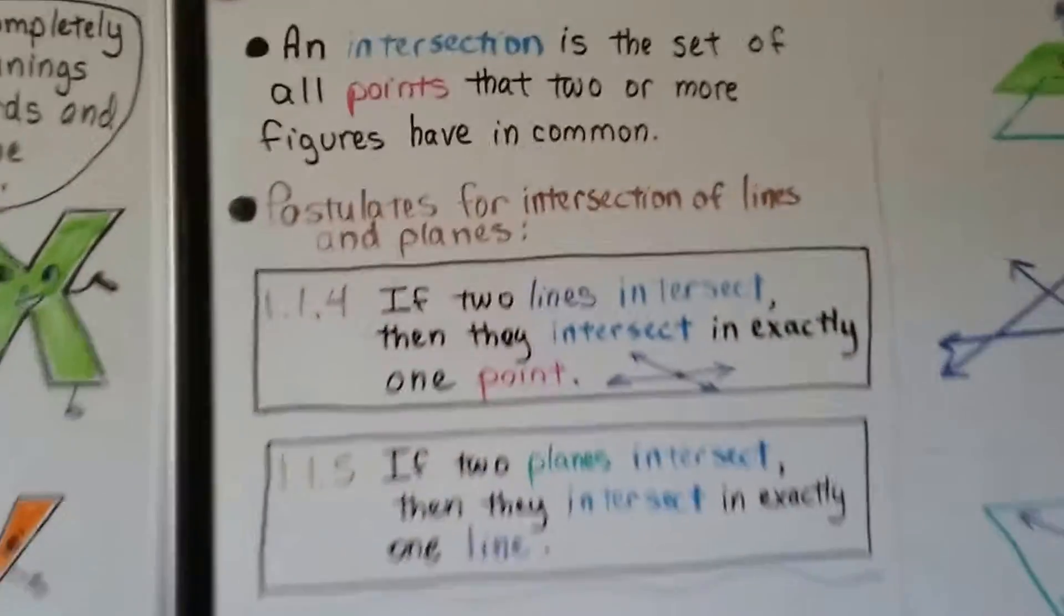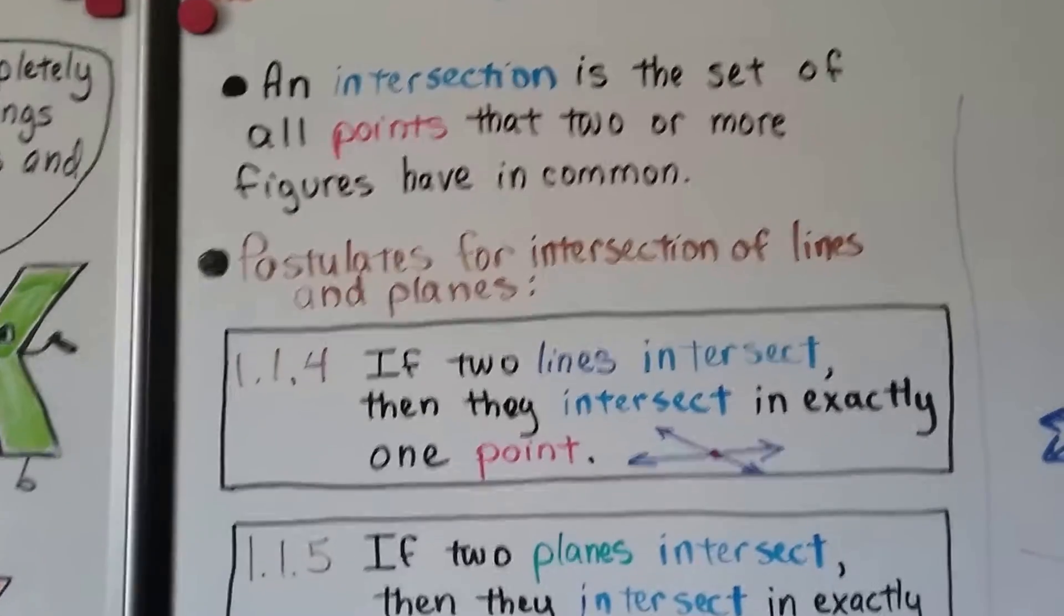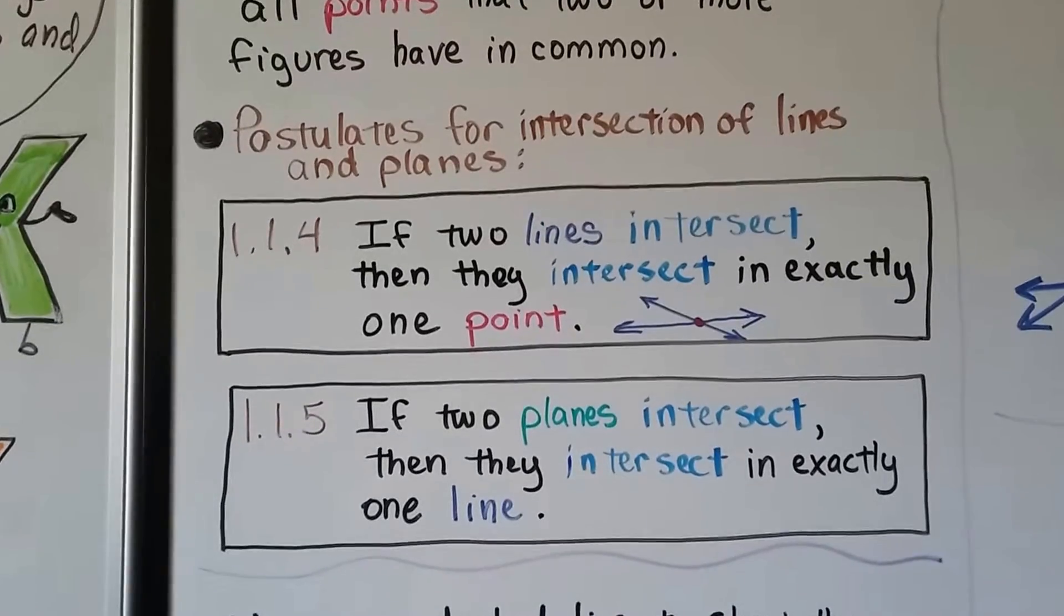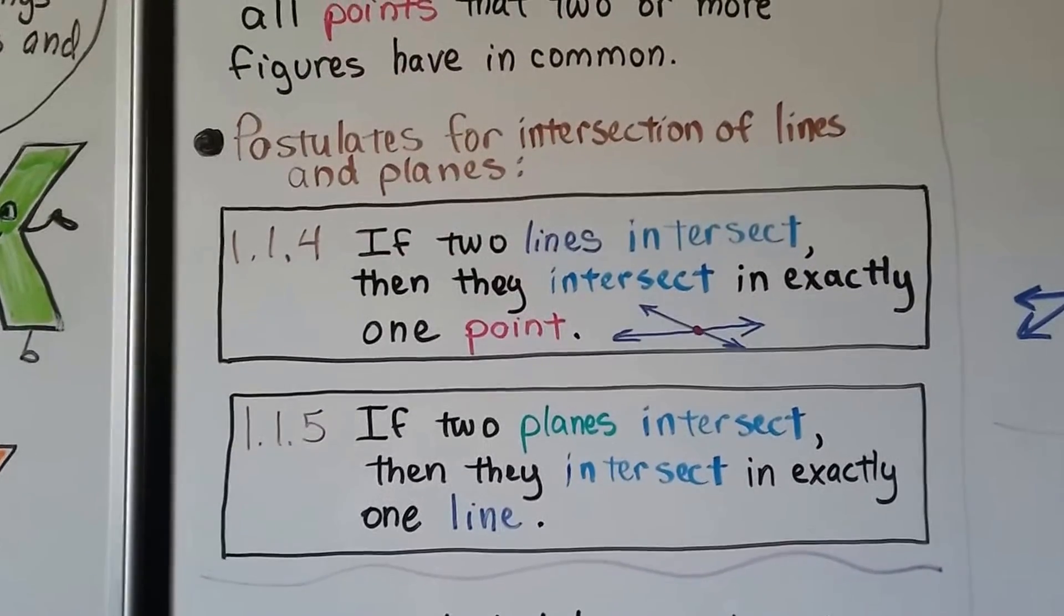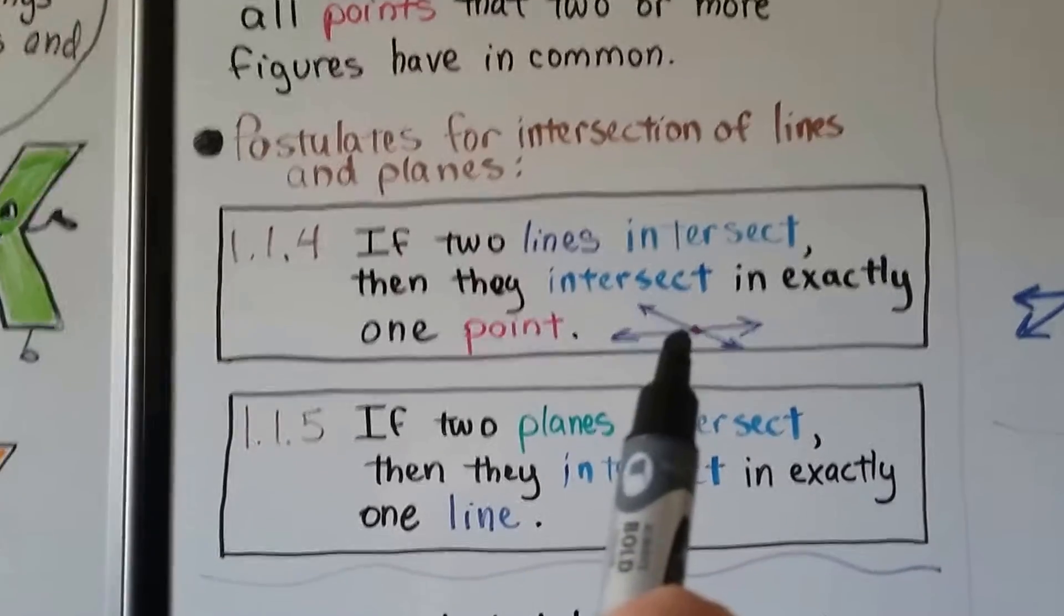An intersection is a set of all points that two or more figures have in common. So here's some postulates for intersections of lines and planes. If two lines intersect, then they intersect in exactly one point. That makes sense, doesn't it?